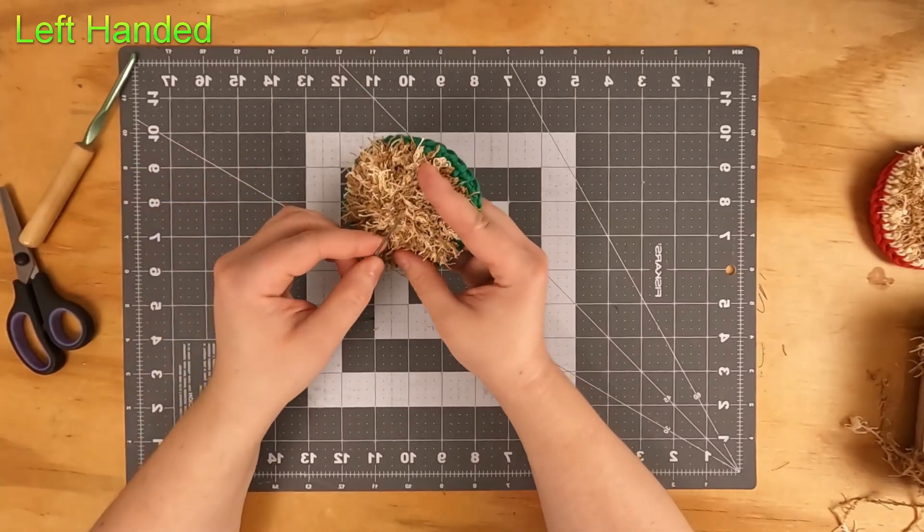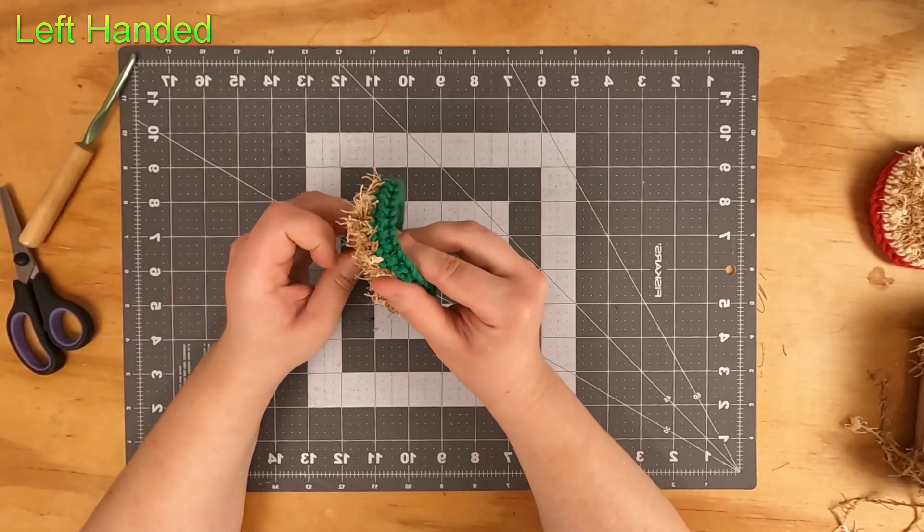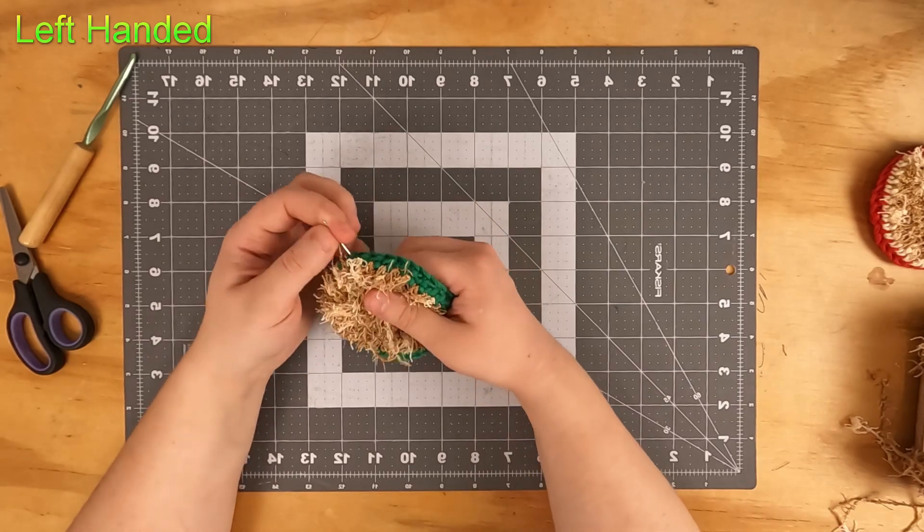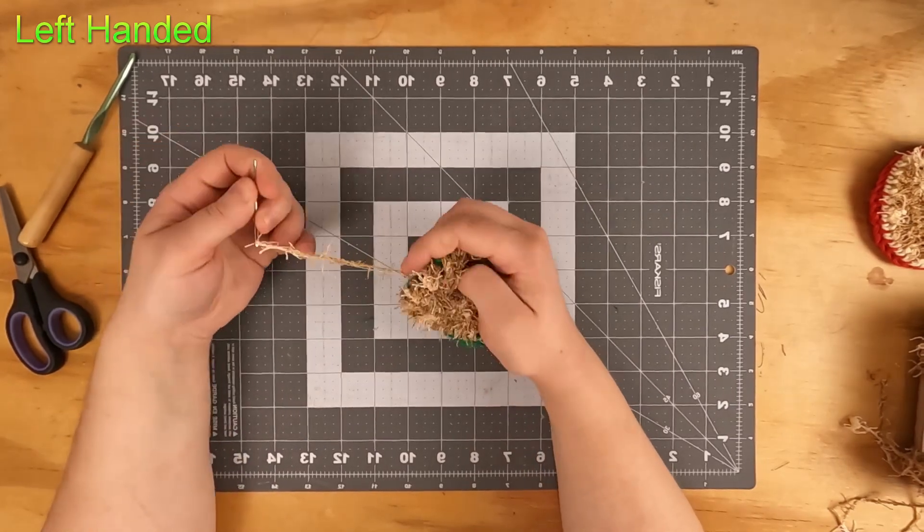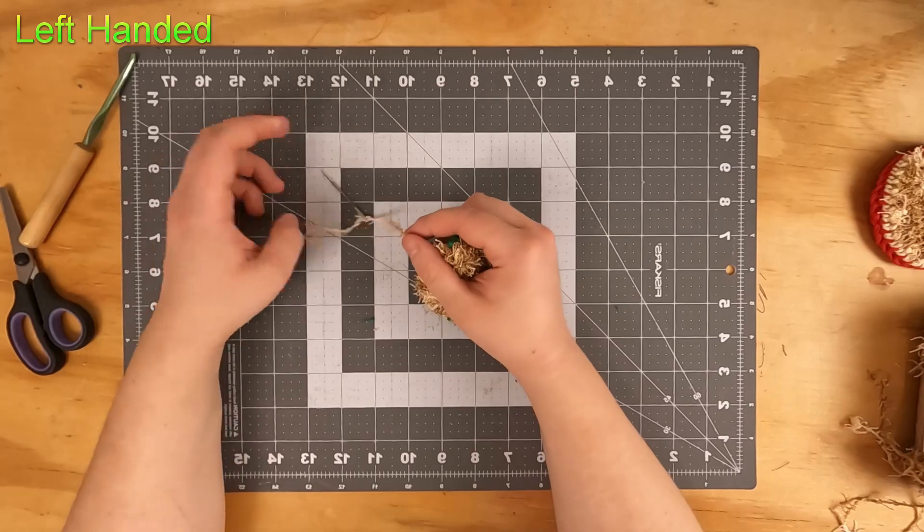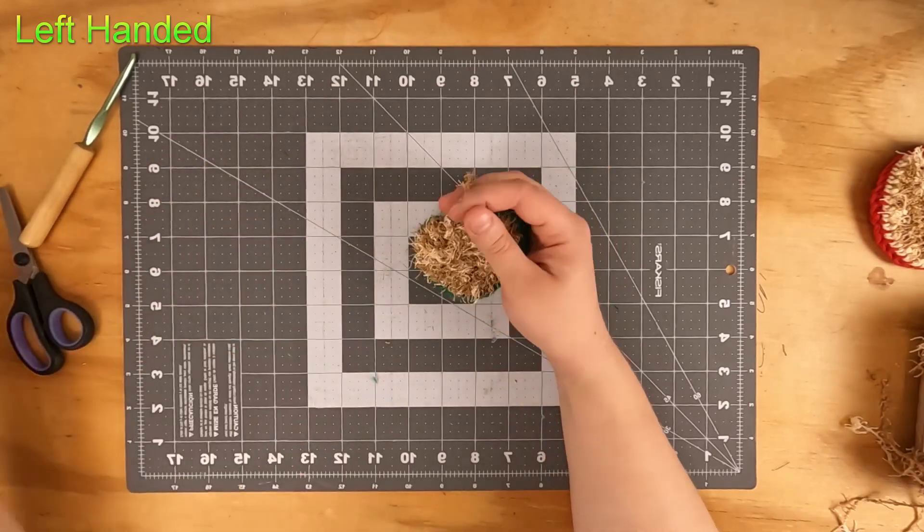Once you have it like that, go ahead and stick your needle in and poke it out just through one of the stitches in the side. Go all the way through, take your needle off of there.